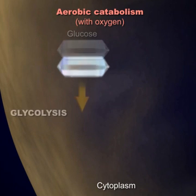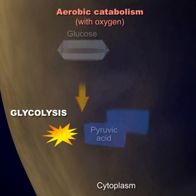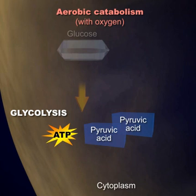In this process of glucose catabolism, glucose is first broken down to pyruvic acid in the cytoplasm. Glycolysis splits one molecule of glucose into two molecules of pyruvic acid. This portion of the process is also anaerobic, and a small amount of ATP is released as well.